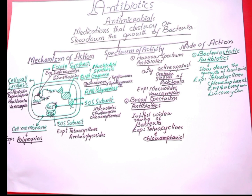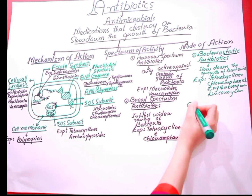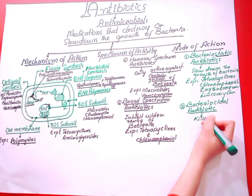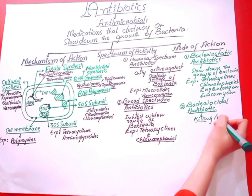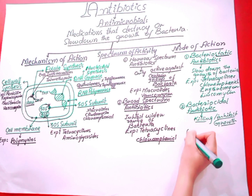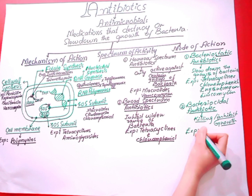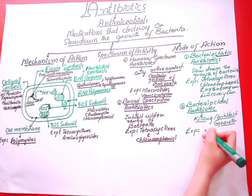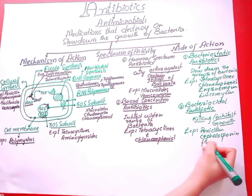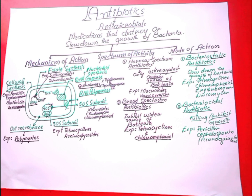The second type according to mode of action is bactericidal. These antibiotics perform their function by killing bacteria. Examples of bactericidal antibiotics are cephalosporin, penicillin, and fluoroquinolones. I hope you understand this lecture — kindly like this video, share it with your friends, and don't forget to subscribe to my channel. Thank you.